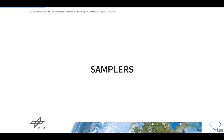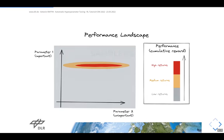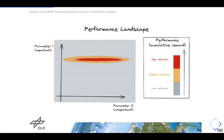How do you sample configurations? We have a performance landscape with two parameters — parameter one and parameter two — and we want to achieve maximum performance, shown as the red area, with medium performance in orange and poor performance elsewhere. One parameter needs to be tuned very precisely; the other can be chosen quite loosely. But you don't know this in advance.